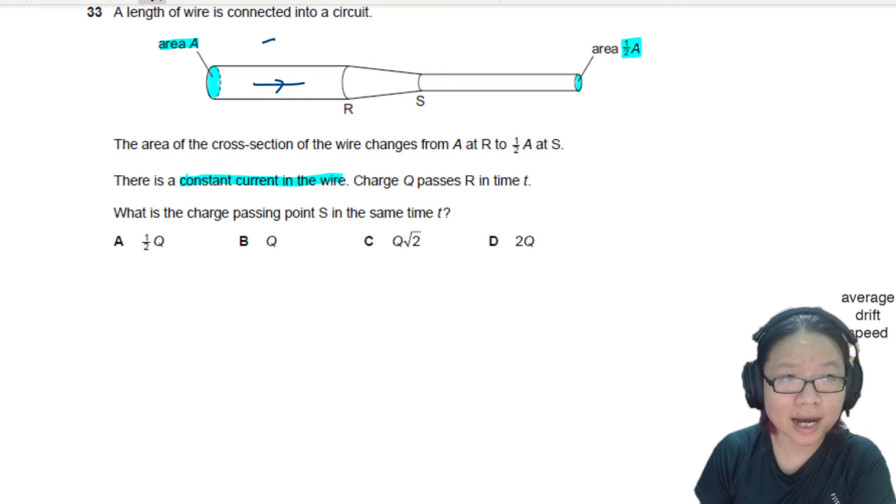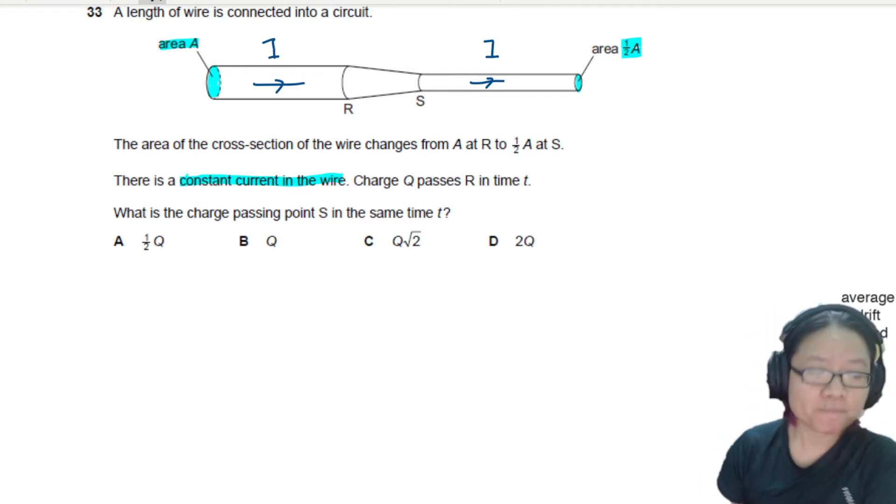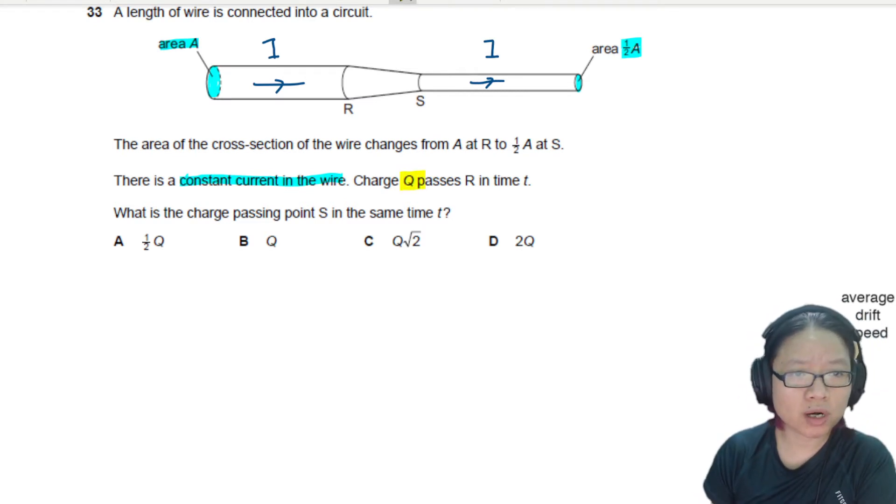So this I and the current here is also I, current is the same. Charge Q passes R in time t, so if you imagine charge flow or the electrons a bit like marbles...